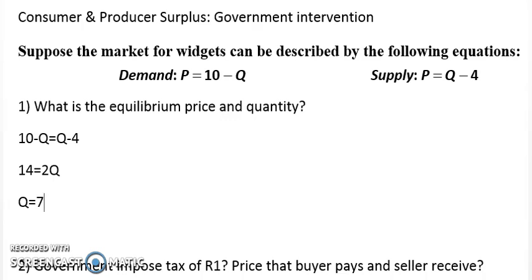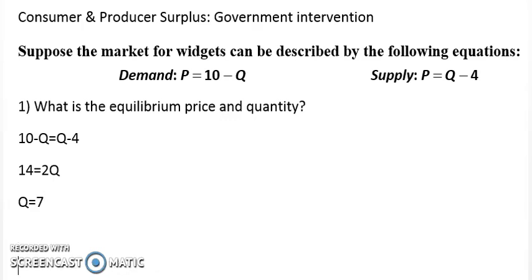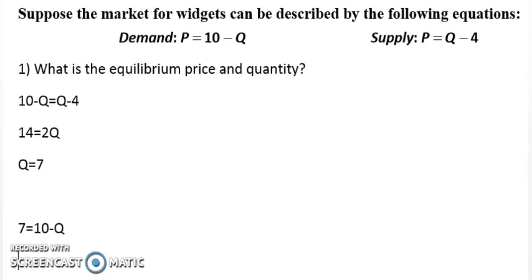We have 7 widgets within the market - that's our equilibrium quantity. For the price, we just insert the 7. We use the demand curve: price equals 10 minus Q. So price equals 10 minus 7, which means our price equals 3. Quantity equals 7 and price equals 3.